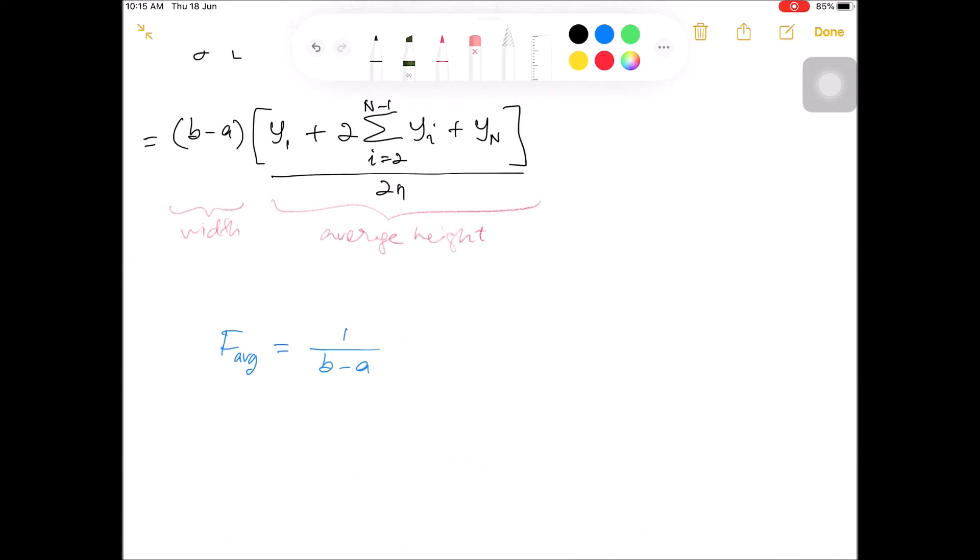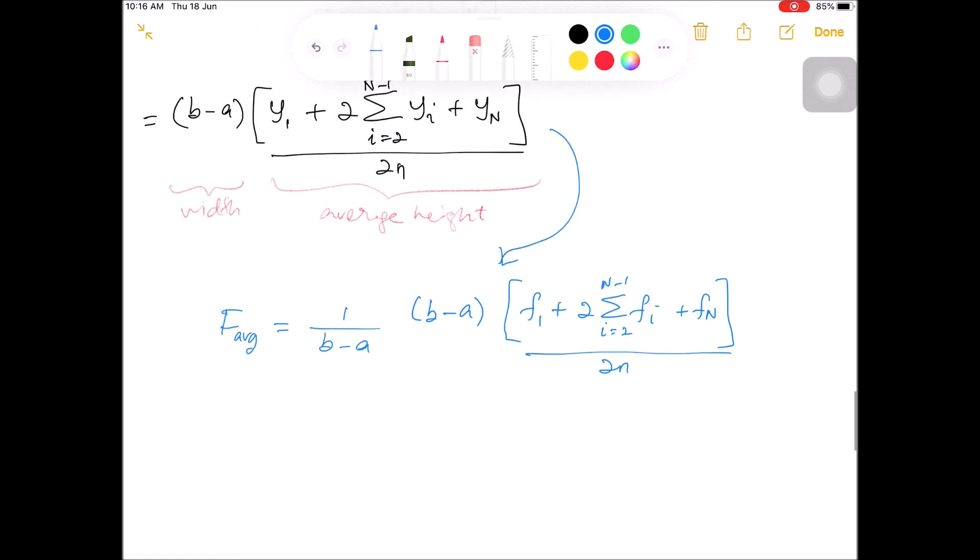So now I want to replace the integral with the trapezoidal rule formula. I move this formula to replace the integral, but I change the notation a little bit so Y will be replaced with F. So B minus A times F1 plus 2 sigma FI, I from 2 to big N minus 1, plus FN, divide by 2N.